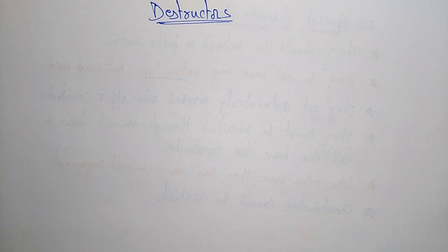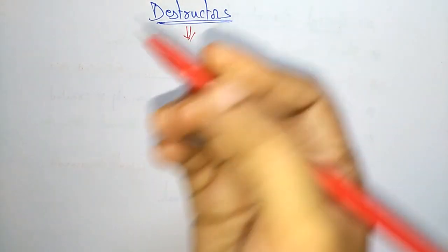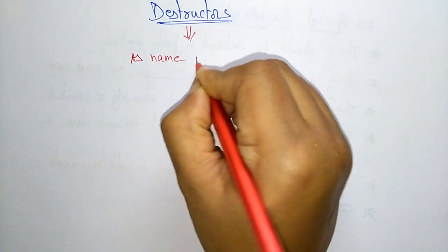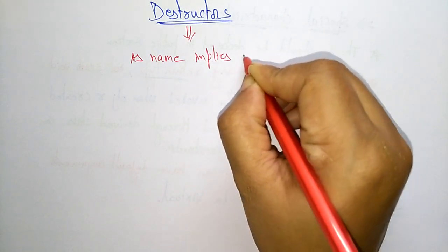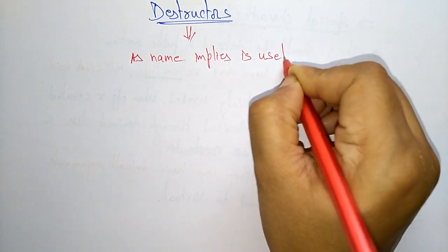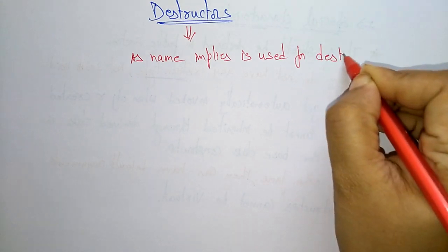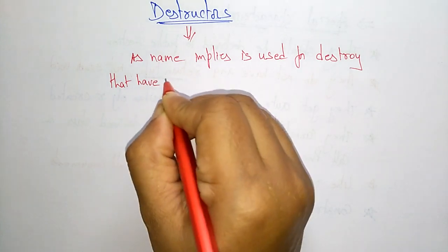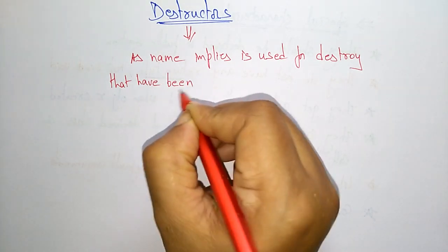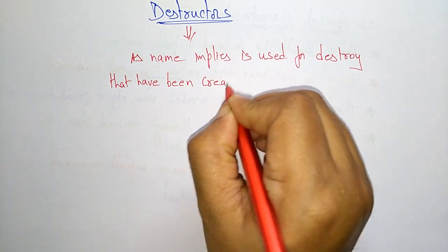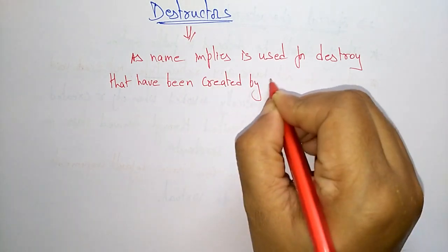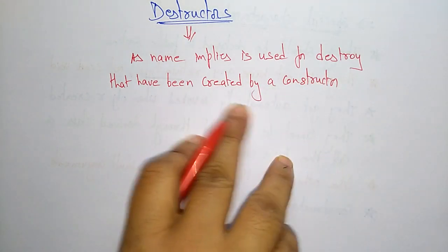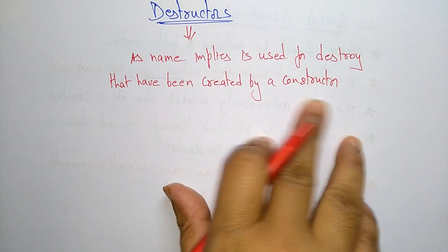Here the destructor, as name implies, is used to destroy. I said that whatever has been created by the constructor that will be destroyed. So whatever the memory that is created by the constructor, that will be destroyed by using the destructor.